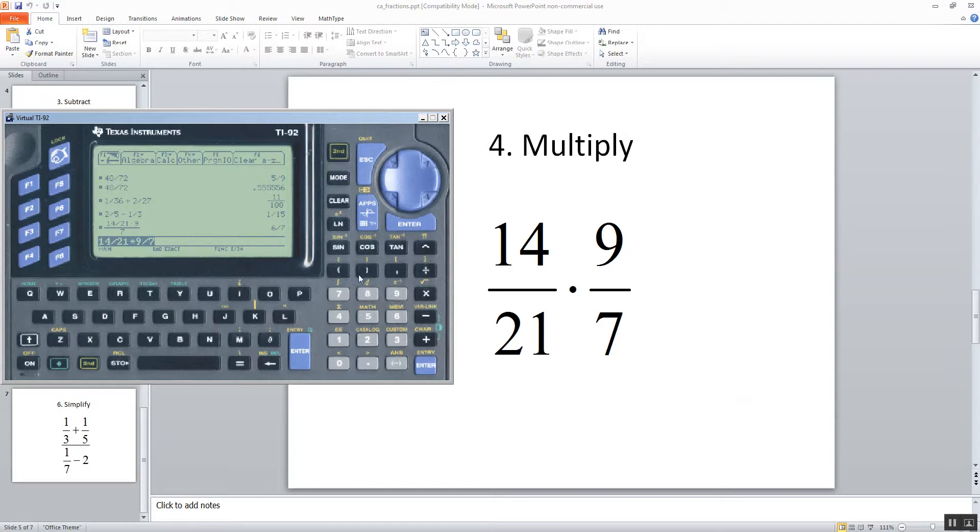Now if I were to put parentheses around, let me clear that. And do a beginning parentheses 14 divided by 21 closing parentheses times beginning parentheses 9 divided by 7 closing parentheses and then push enter. You see we still get 6 7ths.